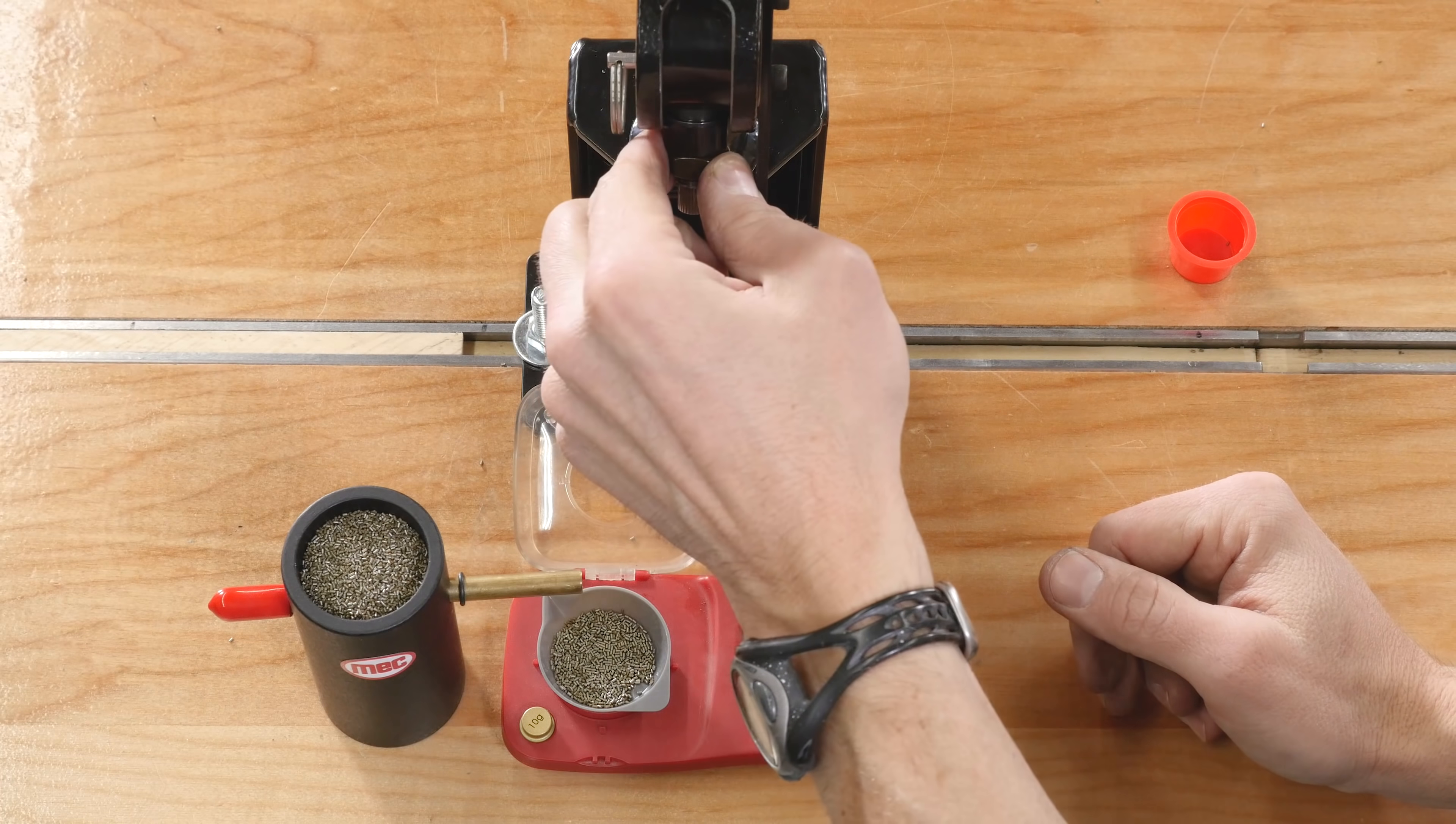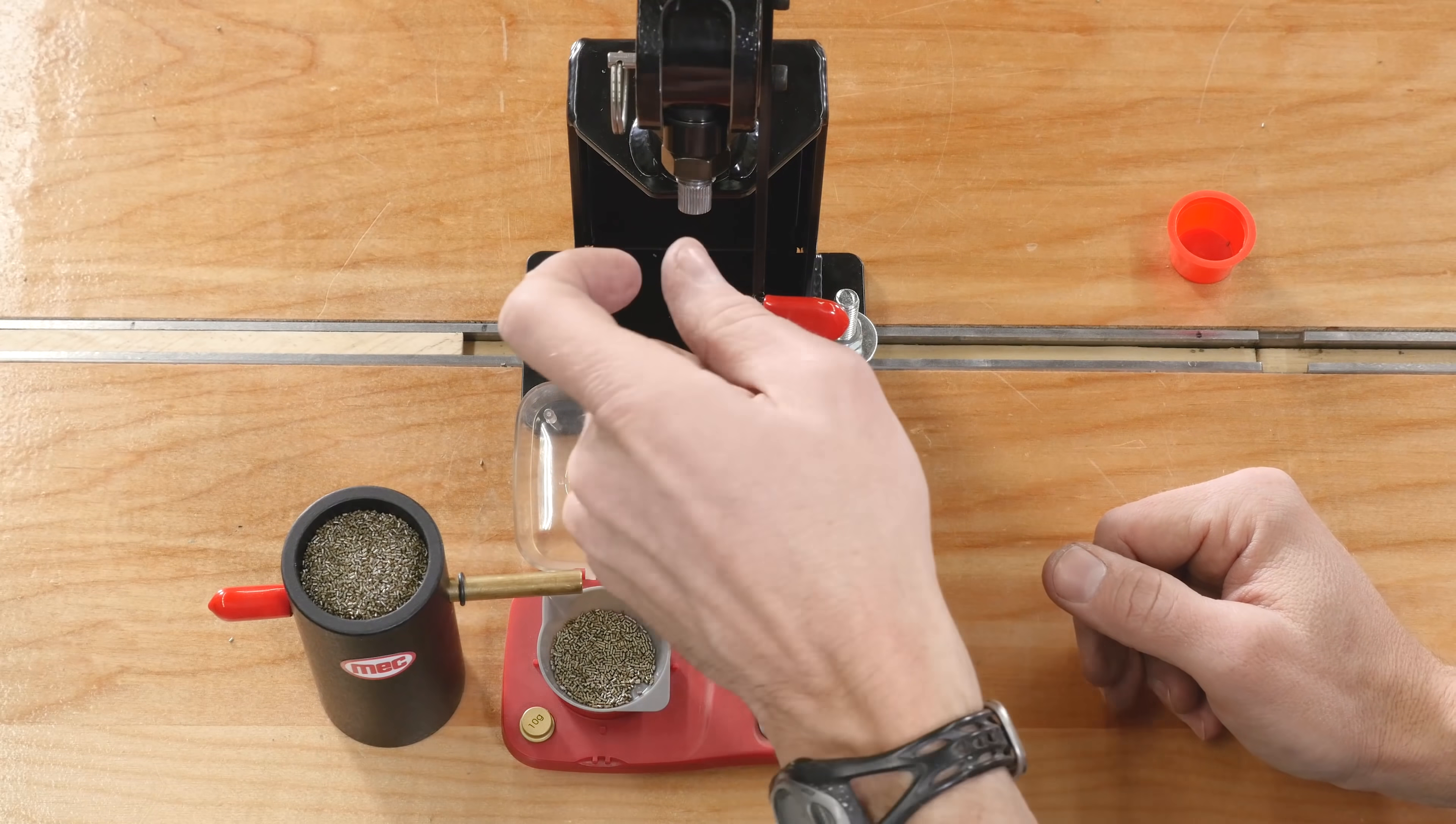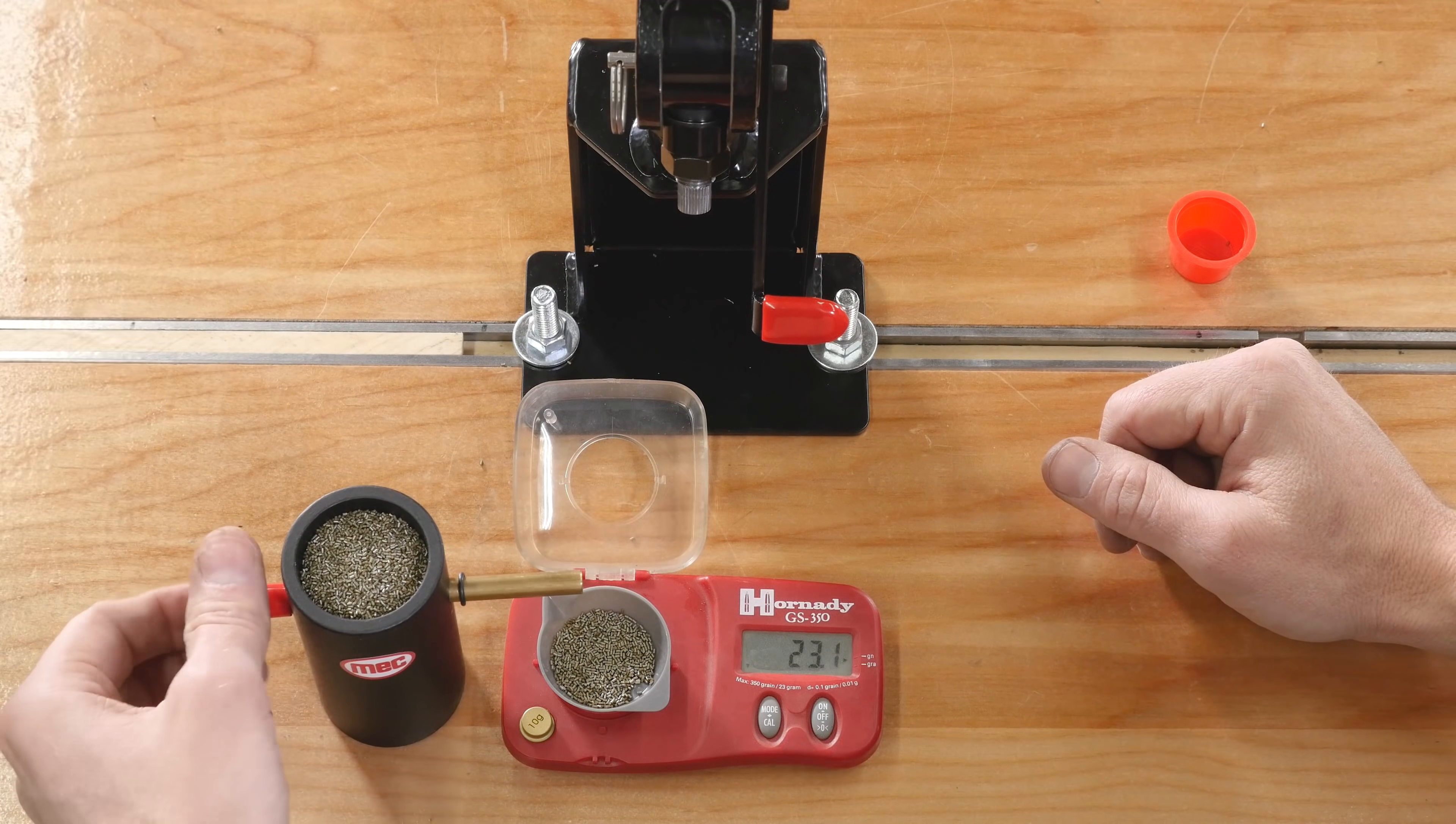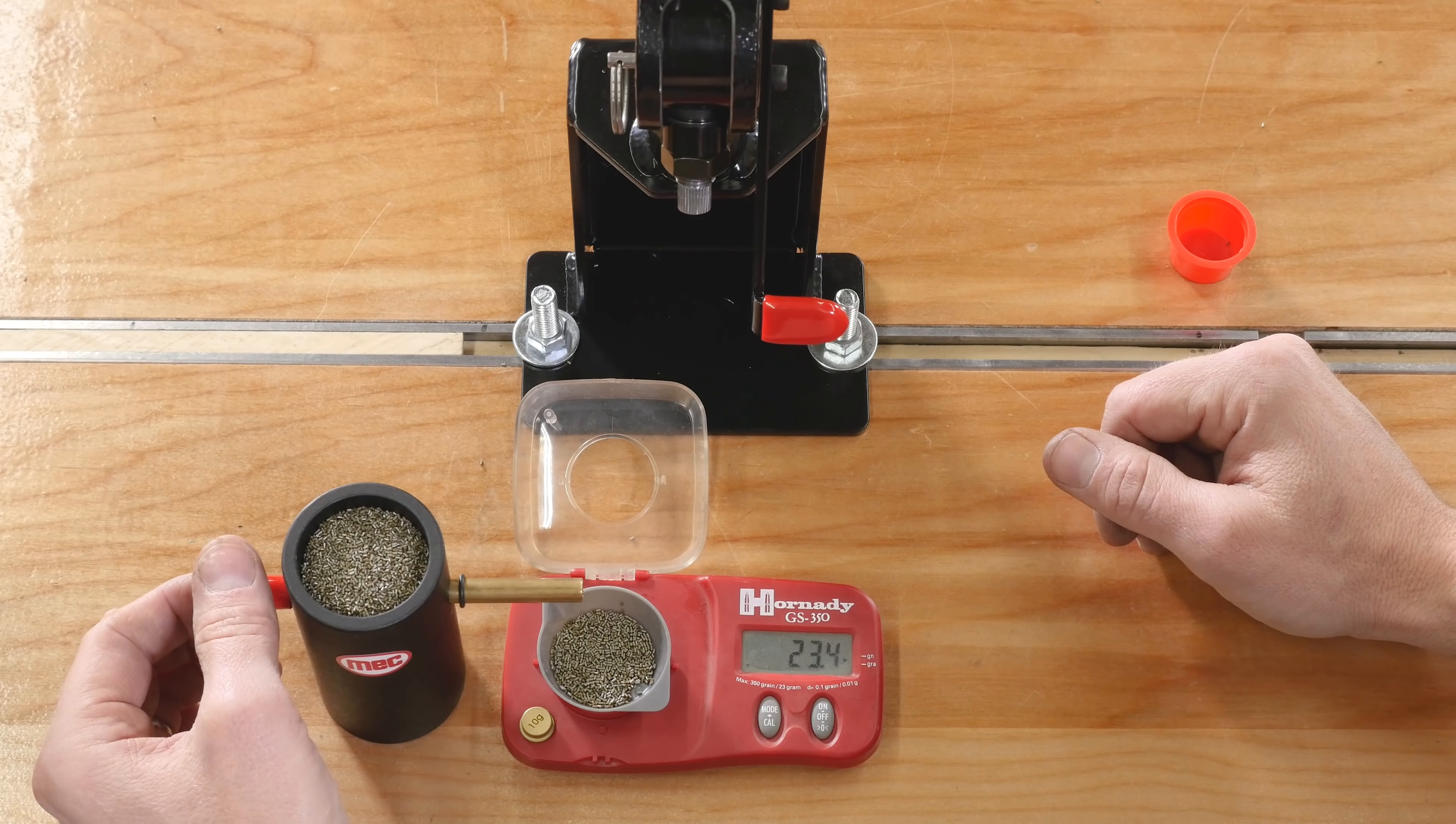Now, what we can do is with this lock nut we can loosen it and then loosen the metering insert screw to get a heavier charge. Screw it in or tighten it to get a lighter charge and then just finger tighten that lock nut again. Now, all we have to do is slowly trickle up to that 23.6. And, when you get to that last .2 grains you wanna go nice and slow.